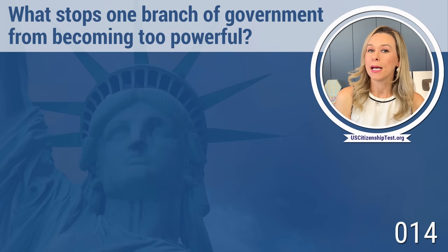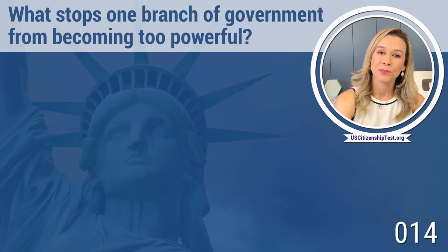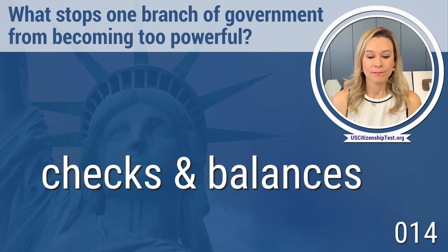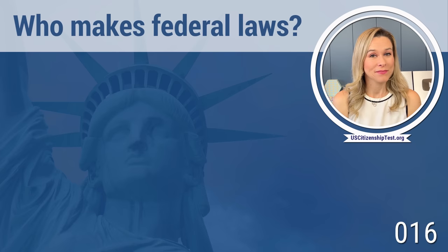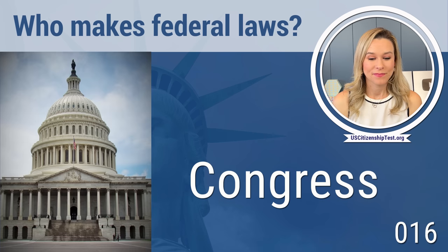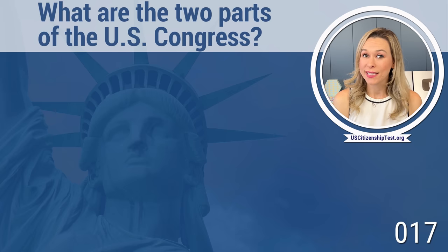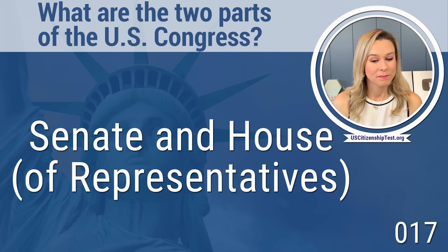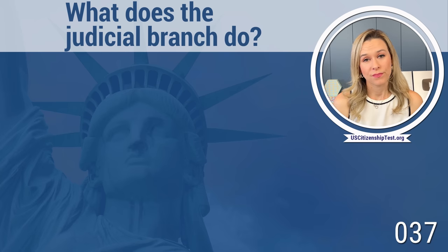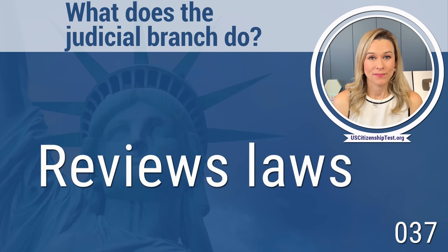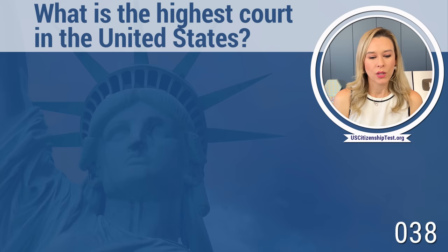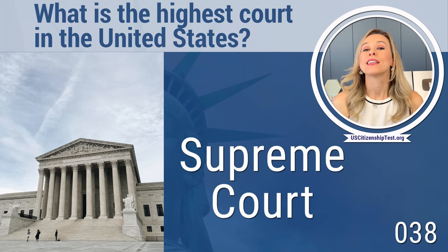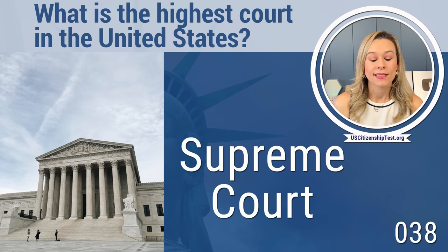What stops one branch of government from becoming too powerful? Checks and balances — they've got to make sure everything is fair. Who makes federal laws? Congress. What are the two parts of the U.S. Congress? The Senate and the House of Representatives. What does the judicial branch do? Reviews laws. What is the highest court in the United States? The Supreme Court — you can think of it as superior, the very top.